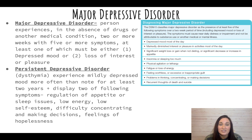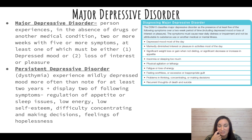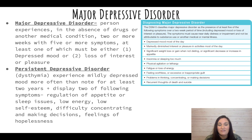Persistent depressive disorder, also known as dysthymia, involves mildly depressed symptoms for at least two years, and the person displays two of the following symptoms: poor regulation of appetite or sleep issues, low energy, low self-esteem, and difficulty concentrating and making decisions.